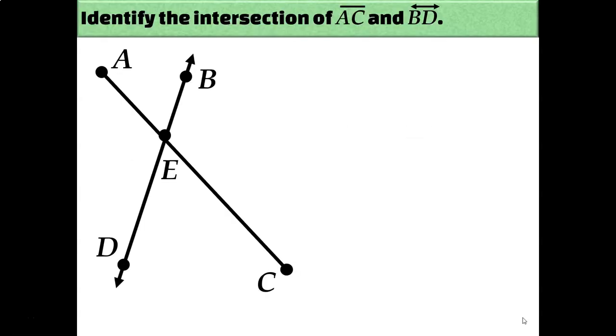Let's take a look at some examples. Here we have a segment, AC, and a line, BD. And I want you to identify the point of intersection between those two figures. In other words, what is the only thing that they have in common? Where do they touch? Where do they cross? And the answer would be point E. That would be the intersection of these two figures.